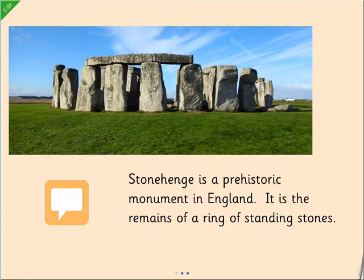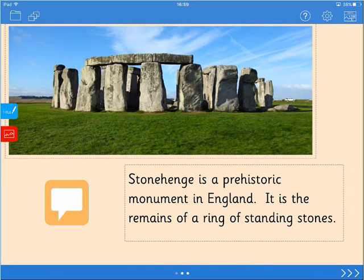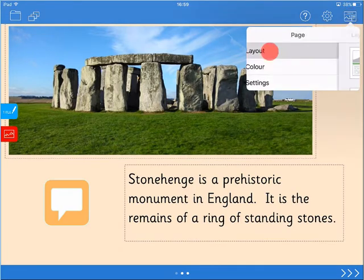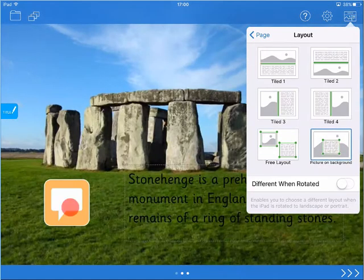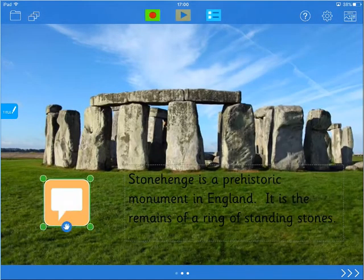The final layout option is picture on background. This fills the background with an image and places all of the other objects in front.